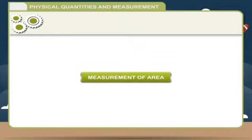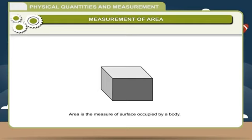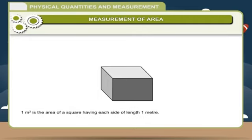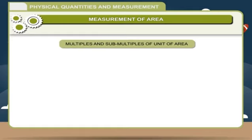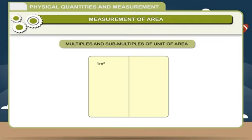Measurement of area: Area is the measure of surface occupied by a body. The SI unit of area is square meter. One square meter is the area of a square having each side of length one meter. A smaller unit of area is one square centimeter. One square meter is equal to 10,000 square centimeters. One square centimeter is equal to 100 square millimeters. One are is equal to 100 square meters.